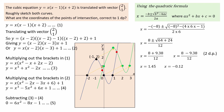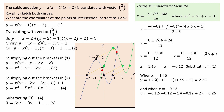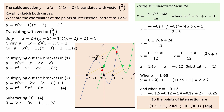Substituting these values into equation 1: when x equals 1.45, y equals 1.45 times (1.45 minus 1) times (1.45 plus 2), which equals 2.25. When x equals negative 0.12, y equals negative 0.12 times (negative 0.12 minus 1) times (negative 0.12 plus 2), which equals 0.25. Finally, rounding to one decimal place, the points of intersection are (1.5, 2.3) and (−0.1, 0.3).